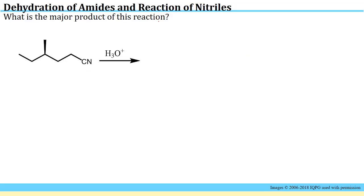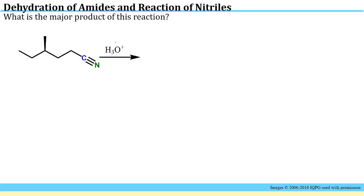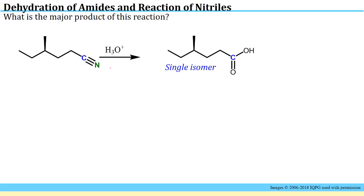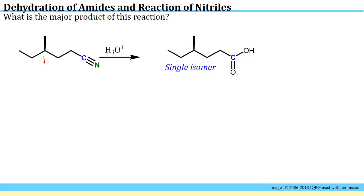The second problem asks for the major product of reaction between the cyano group and aqueous acid. It helps if you draw out the cyano group as the C≡N triple bond, which helps you identify the electrophilic nature of that carbon because that bond is quite polar. It's a complicated mechanism, but in the primer you're shown all the steps and you'll get conversion of the nitrile group to a carboxylic acid group. Since we started with a chiral center at this position and didn't do any reactions on that center, you will have one single isomer where that stereochemistry is retained.